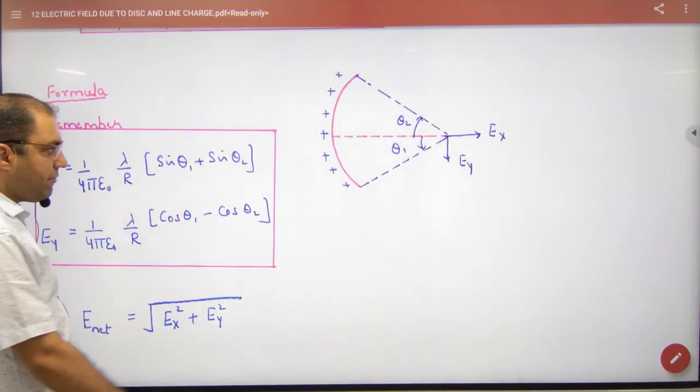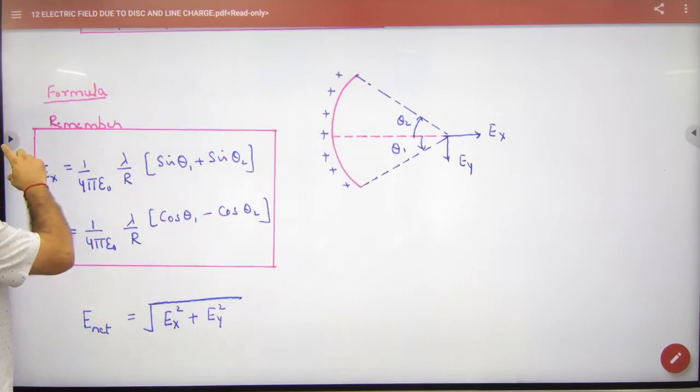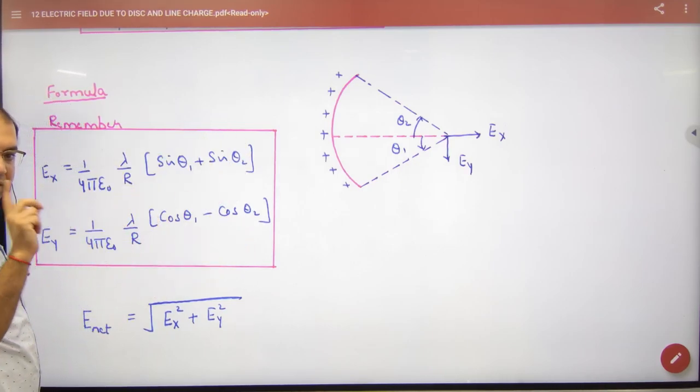So note in formula register, if an arc is, the angle is theta 1 and the above is theta 2, then E is this formula, E is this formula. E and E are 90 degrees.